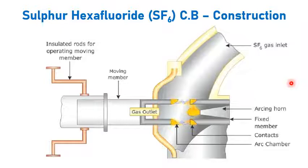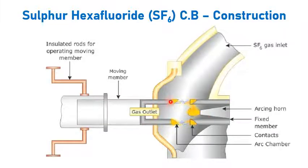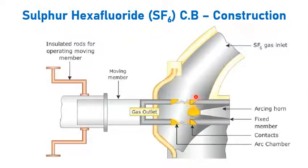Let us see the construction of the SF6 circuit breaker. The moving contact and the fixed contact are hollow cylinders with holes on their sides, and they are coated with tungsten. There is a reservoir for keeping the SF6 gas stored. When the contacts are closed, the surrounding space between the contacts is filled with SF6 gas at some pressure, and a separate reservoir is used for storing the SF6 gas.